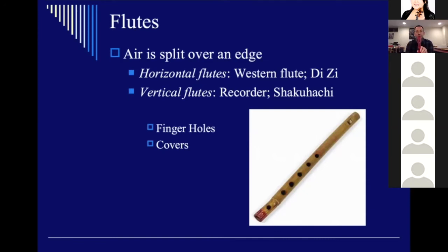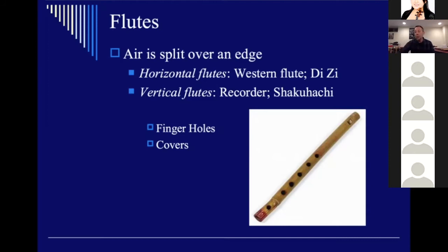The recorder is organologically a flute because the air is split over an edge. There is a mouthpiece and you blow through the instrument, but there is an opening with a sharp edge that causes the vibration, which gets funneled through the tube. Western flutes have pads and covers, whereas instruments like the recorder just have finger holes — that's a further designation for separating the various types of flutes.